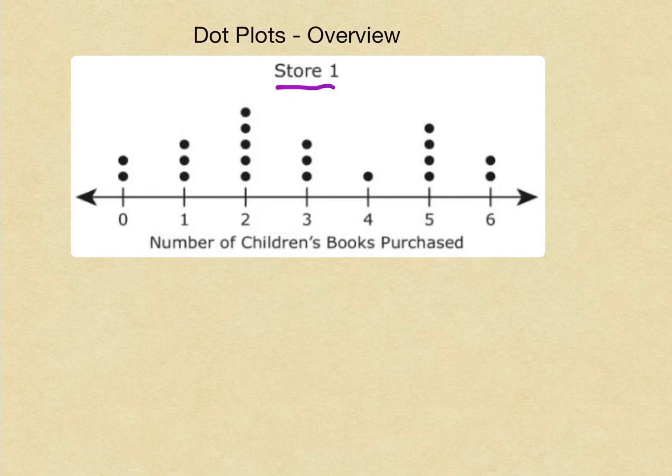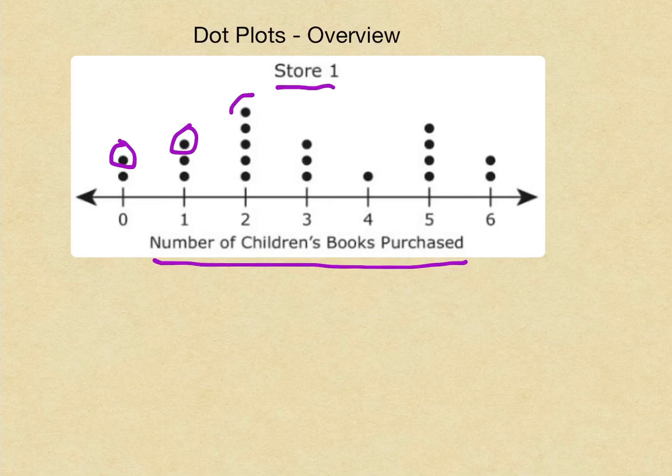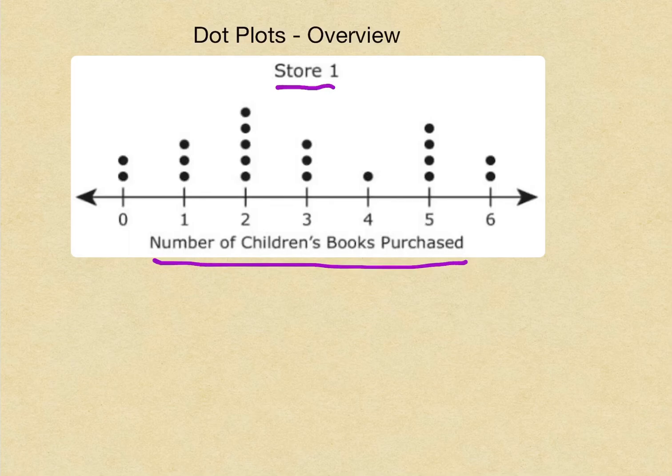This one is about a store, store one. We also have a number line, and this is going to represent the number of children's books purchased. Each data point is represented by a dot. To show you what I mean, we're going to actually write out the data for this dot plot.